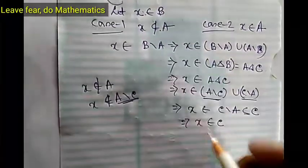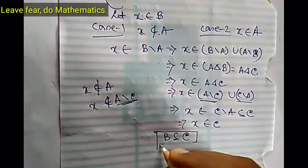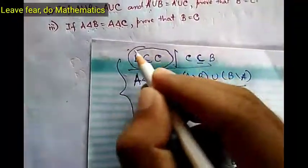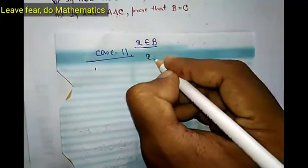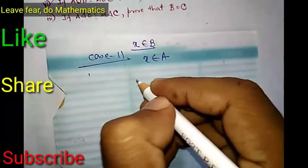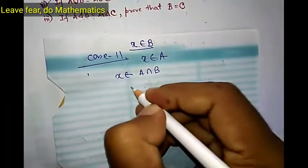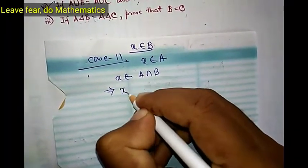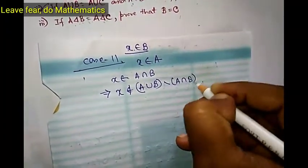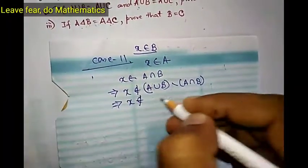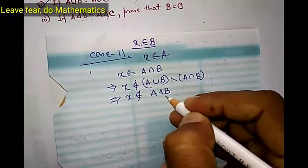We started from X belonging to B and arrived at X belonging to C, so B is a subset of C. We have proved one side: B is a subset of C. Now let us move to case 2. We have X belongs to B and X belongs to A, which means X belongs to A intersection B. This implies X does not belong to (A union B) difference (A intersection B). This expression (A union B) difference (A intersection B) is A symmetric difference B. So X does not belong to A symmetric difference B.